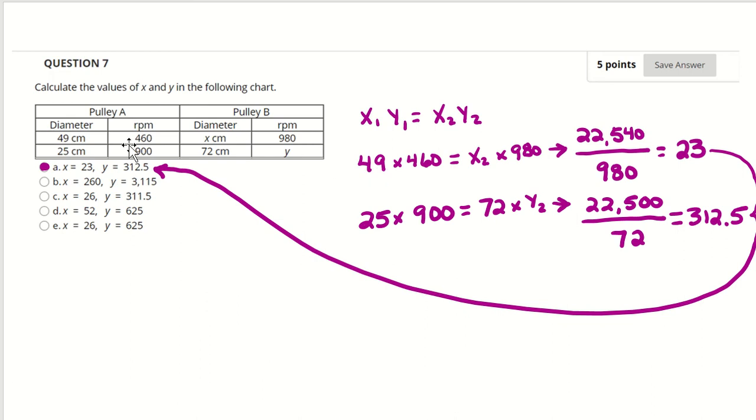So we do the math here. 49 times 460 equals x times 980. 22,540 divided by 980 comes out to 23.